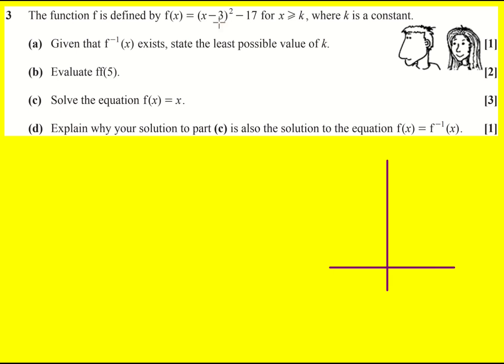It would have a minimum at (3, -17). You get that from completed square form because this bit here is always greater or equal to 0. The smallest it could be would be 0 and then the smallest the function could be would be -17, and it's 0 when x is equal to 3.